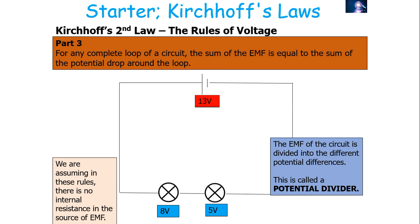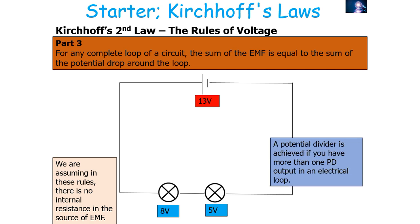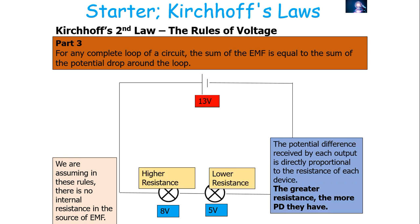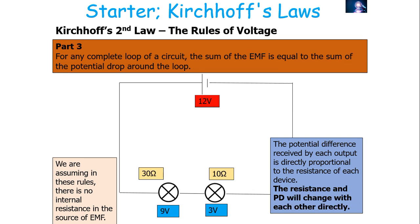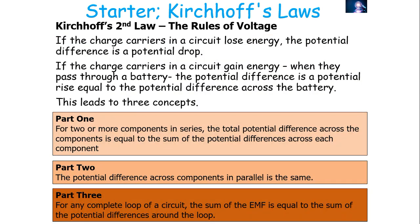The EMF is divided into different potential differences, and we call this particular type of circuit a potential divider. A potential divider is achieved if you've got more than one potential difference output in your electrical loop. The potential difference does not have to split equally — it splits in direct proportion to the resistances. The greater the resistance, the greater the potential difference an output will take, so resistance and potential difference change with each other directly.